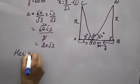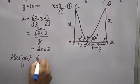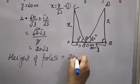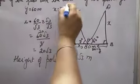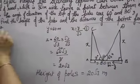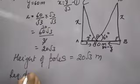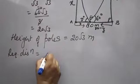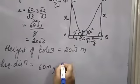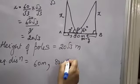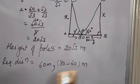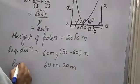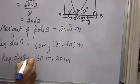Means height of pole, since both poles are equal height, height of poles is 20 root 3 meter. Now you have to find distance of the point from the two poles. So required distance, one is y which is 60 meter, the other is 80 minus 60, so 60 meter and 20 meter. This is the required distance. Thank you.